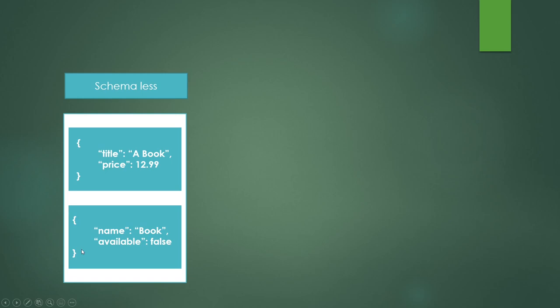For example, we have two documents inside a collection. The first document has the fields 'title' with a value of 'book' and 'price' of $12.99. The second document has completely different fields — 'name' and 'available' — with no 'title' or 'price' field. These two schemas are completely different. This is the schemaless approach.